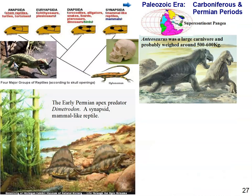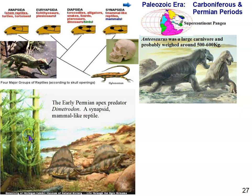In the Carboniferous and Permian periods — the Carboniferous is called that because that's when coal deposits formed. Vast forests of fern-like plants covered the world, grew fast, died, fell to the ground, didn't decompose, got buried, and that's what formed the coal deposits we now dig up and burn as fossil fuels.